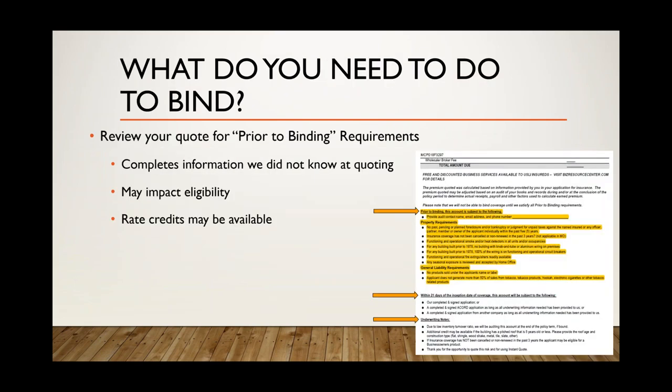To bind: once you have the quote, we have a seamless process — the subjectivity items on the quote will let you know exactly what we need to proceed to binding. Some questions impact eligibility and rate. I would suggest getting that information to us quickly, or when on the phone you can request a full quote and they'll go through all eligibility questions with you. If there's no D&O, we can do a 21-day subjectivity item to get the completed application. If we are quoting D&O, we would need a full completed application at binding.